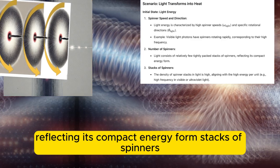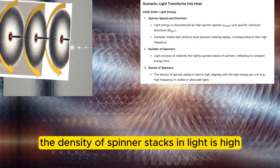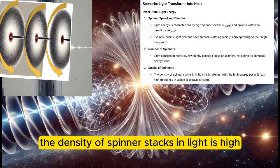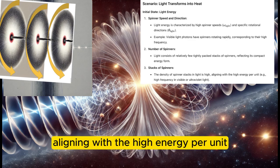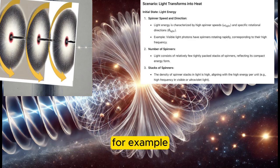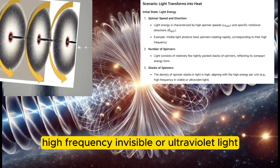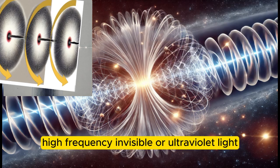Stacks of spinners: the density of spinner stacks in light is high, aligning with the high energy per unit — for example, high frequency invisible or ultraviolet light.